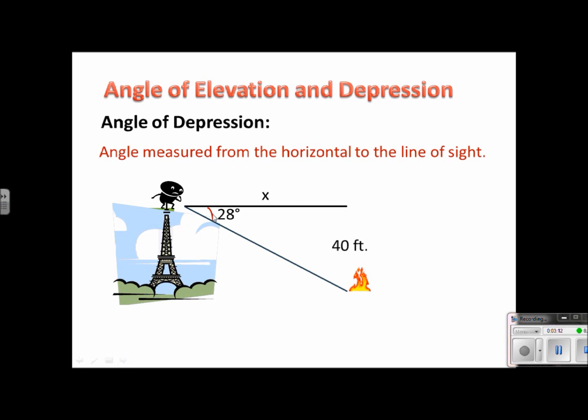And of course, he wants to call the fire department. And the angle of depression is 28 degrees. And he knows that the tower is 40 feet tall, so that this distance right here would be 40 feet. And he wants to know how far the fire is from the tower. So we're going to give this an x so that he can call the fire department and they can put this fire out.